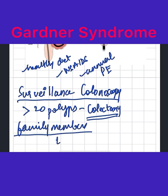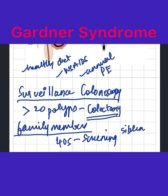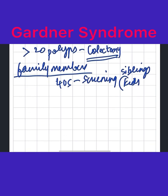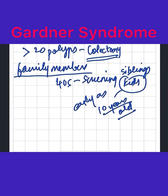For other family members who have not yet developed symptoms — for example, if a man in his 40s comes to you — start screening the siblings and the kids. Colonoscopy should start as early as 10 years old to prevent colon cancer and death, and it has to be repeated every one to two years.